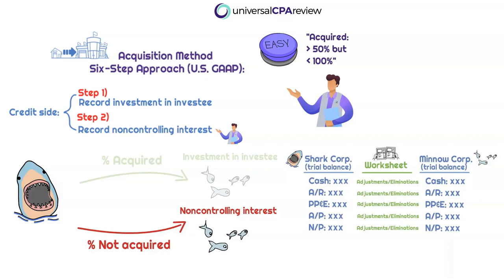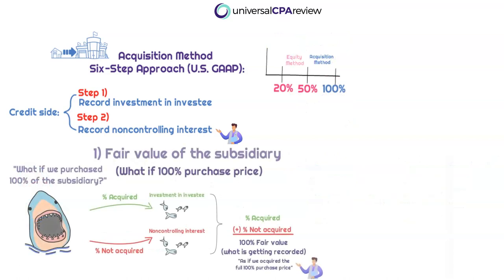The whole point is that at the end of the day, the parent company SharkCorp is going to report 100% of the fair value of the company, even if they didn't acquire 100%. The difference is still going to be represented in the parent's consolidated financial statements, within the equity section. So while we're on the topic of non-controlling interest, let's quickly run through how we're going to calculate this non-controlling interest figure.